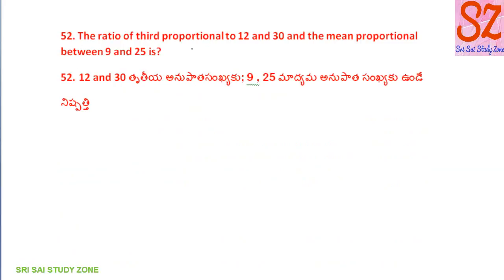The third proportional to 12 and 30, and the mean proportional between 9 and 25. That is equal to under root of x minus y.